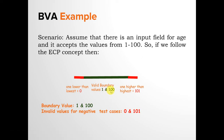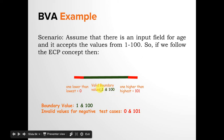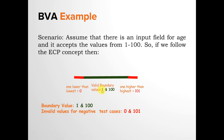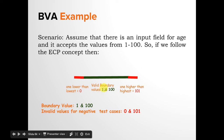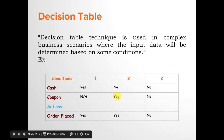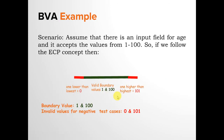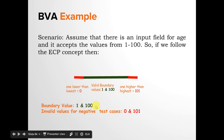In boundary value analysis, you check at least the exact boundary values and also one value lower than the lowest and one higher than the highest. So the exact lower than the lowest valid value is 0, and one higher than the highest is 101. There will be four test data points for which you write test cases: 1, 100, 0, and 101.